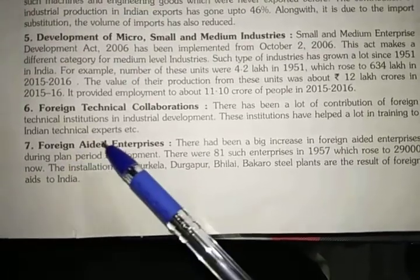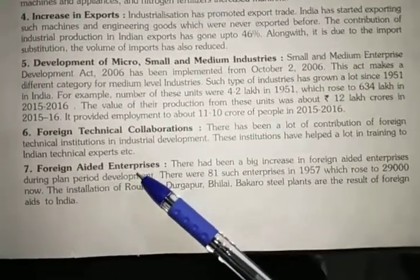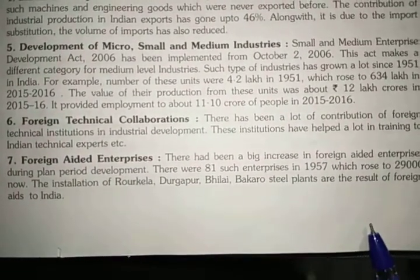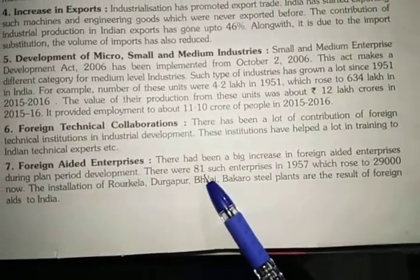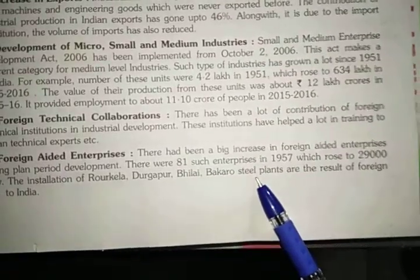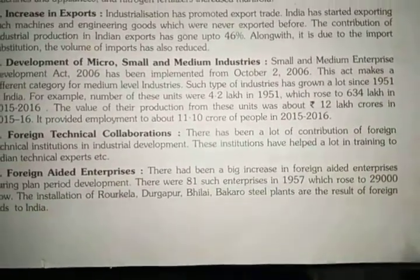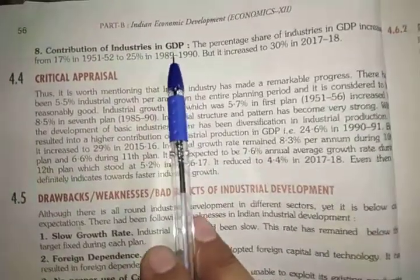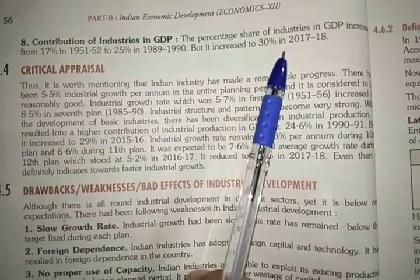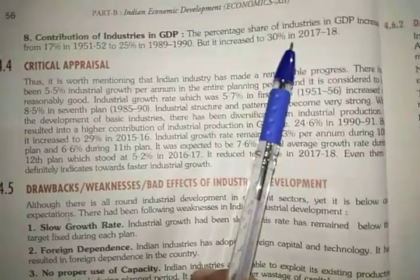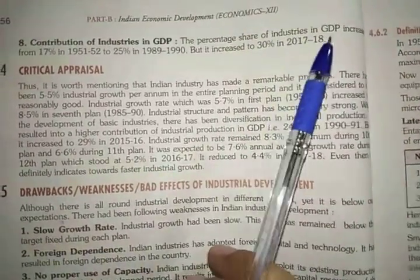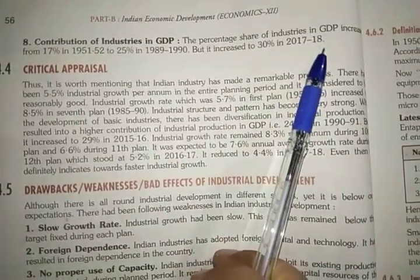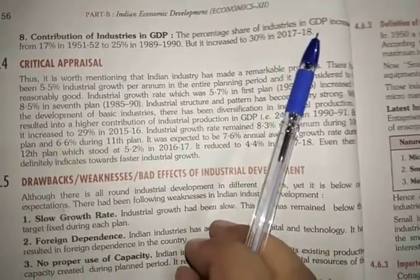Next is foreign aided enterprises — enterprises which are supported by foreign countries. Earlier in 1957 there were only 81 such enterprises, but now in the modern era there are 29,000, which is a great increase. Next, the industrial sector has also contributed to GDP. If someone is producing something and productivity and earnings are good, that industry contributes to GDP. When production increases, GDP simultaneously increases.